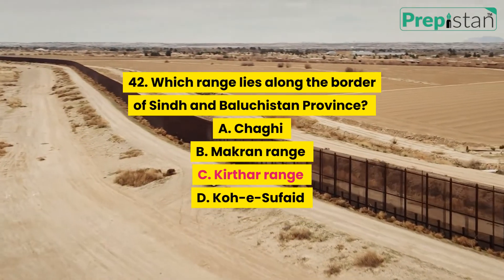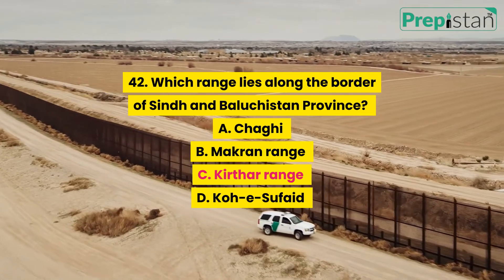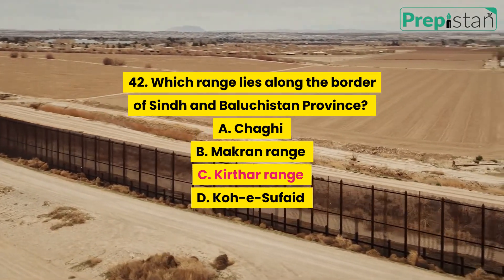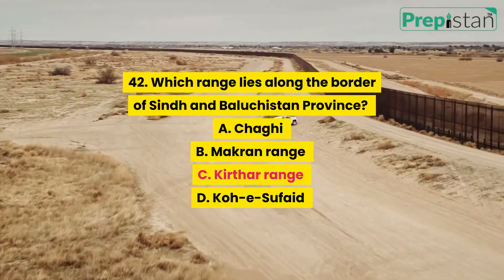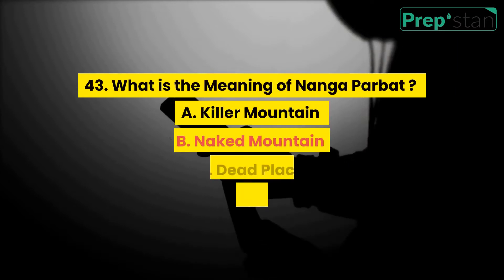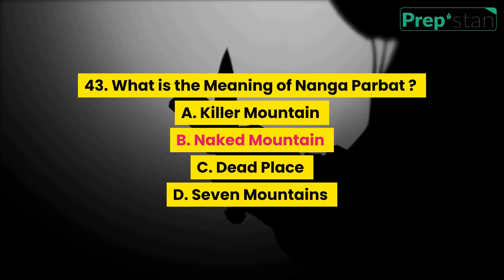Question 42: Which range lies along the border of Sindh and Balochistan province? A. Chagai, B. Makran range, C. Kirthar range, D. Koh-e-Safaid.